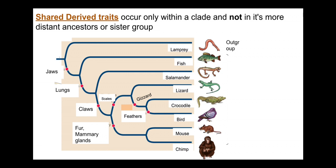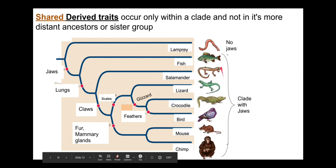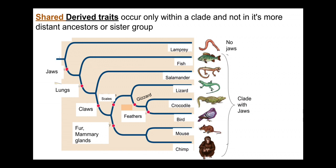Shared derived characteristics are shared traits that only occur in a clade and not in its more distant ancestor. For example, this clade here — the gnathostomes — all have jaws, whereas lamprey don't. The trait of jaws shows up here; lamprey do not have hinge jaws, whereas all these other taxa do. That defines a clade — they all possess that trait. We mark the trait here, and that implies that everything downstream of it has that trait.